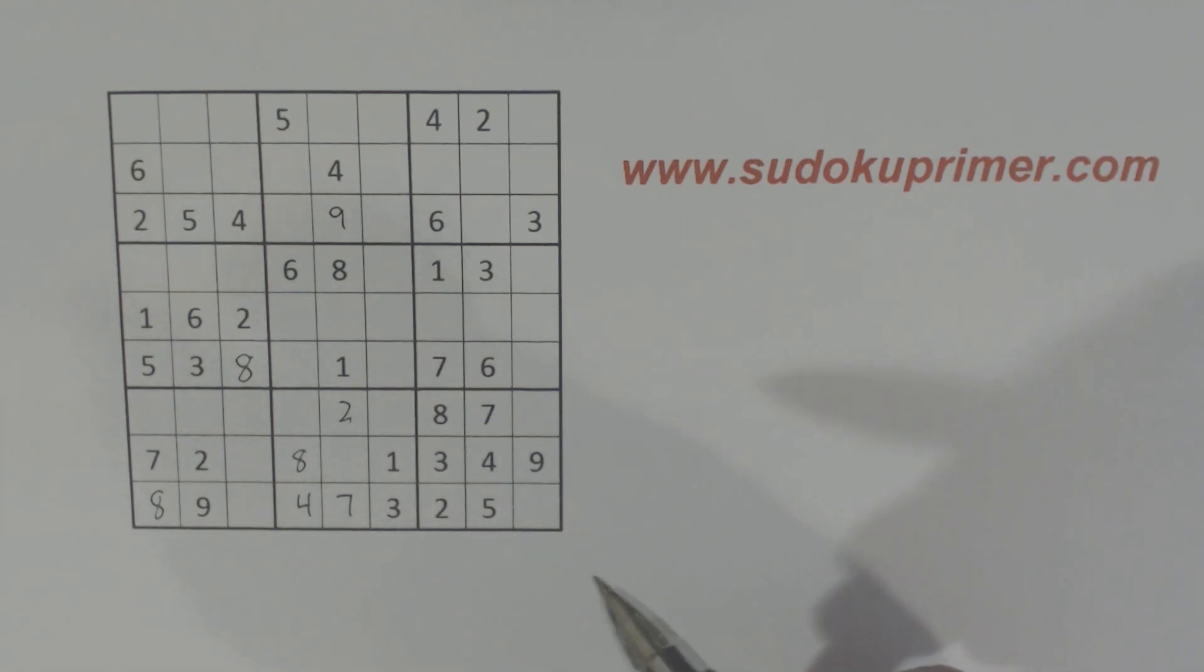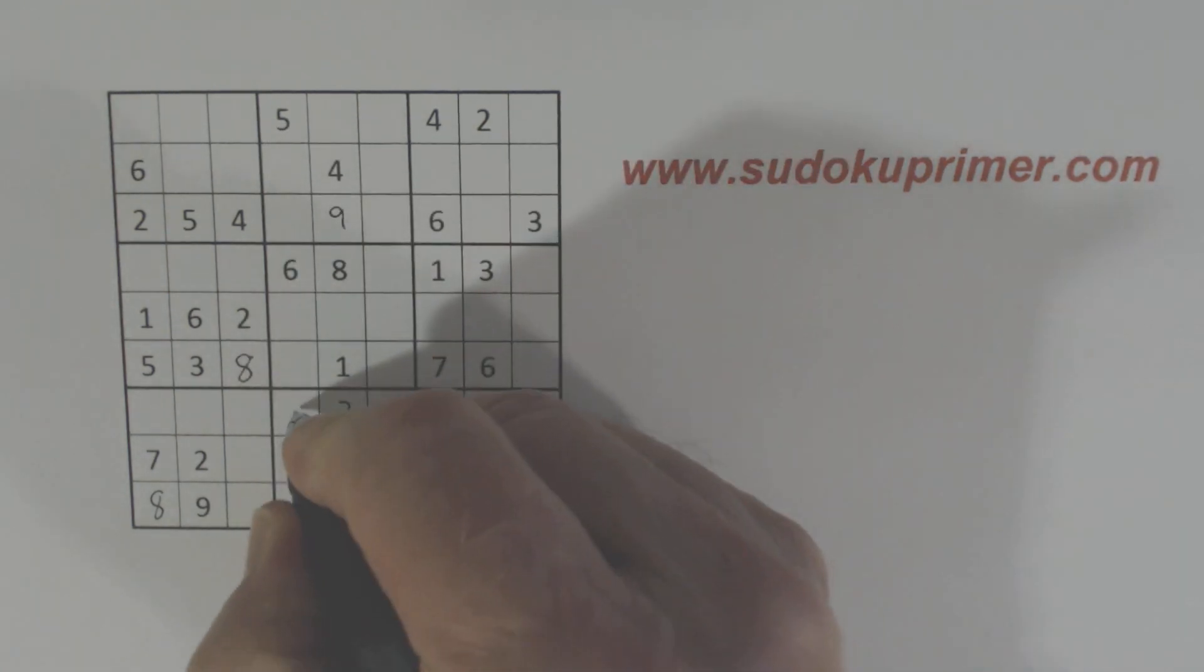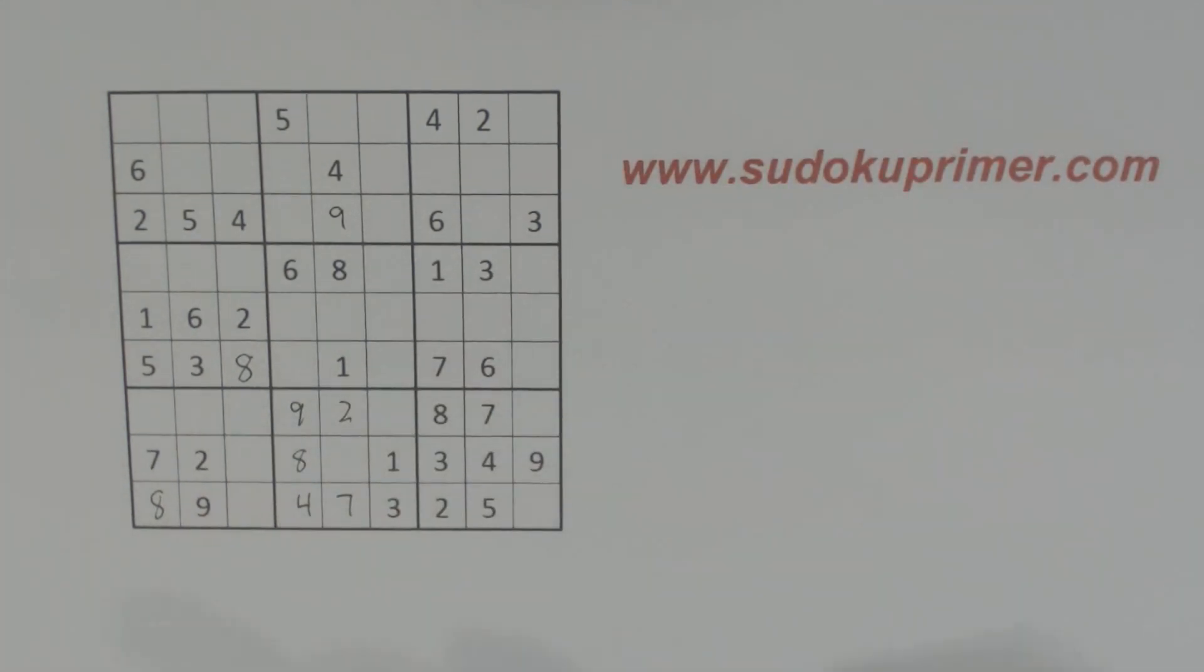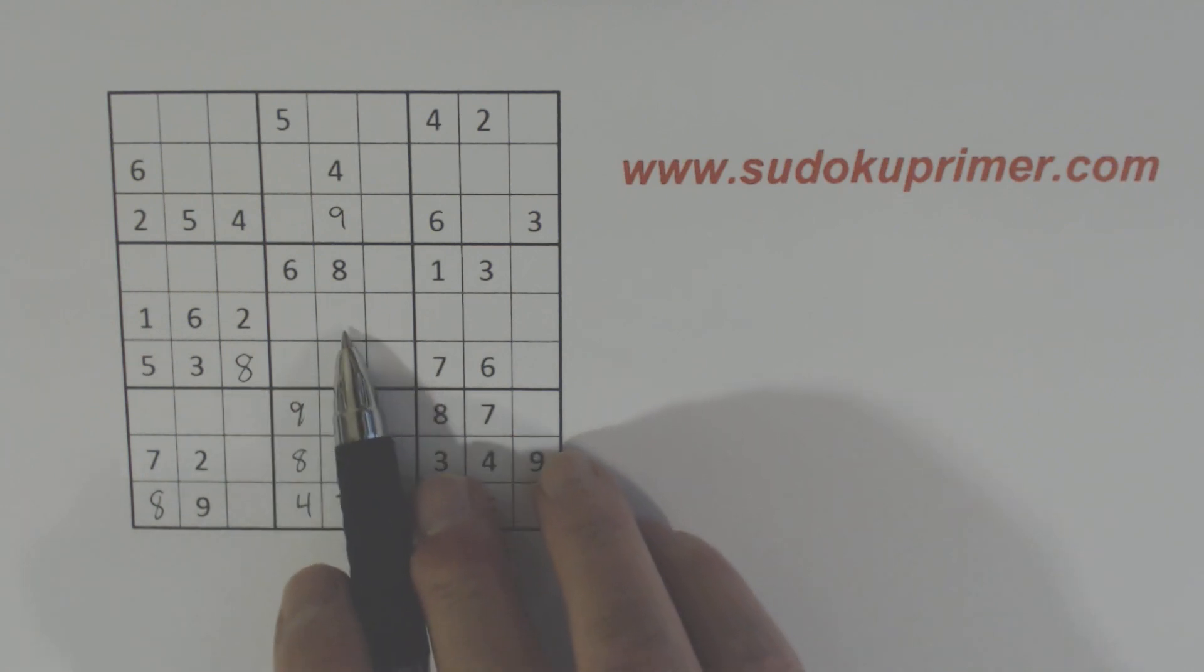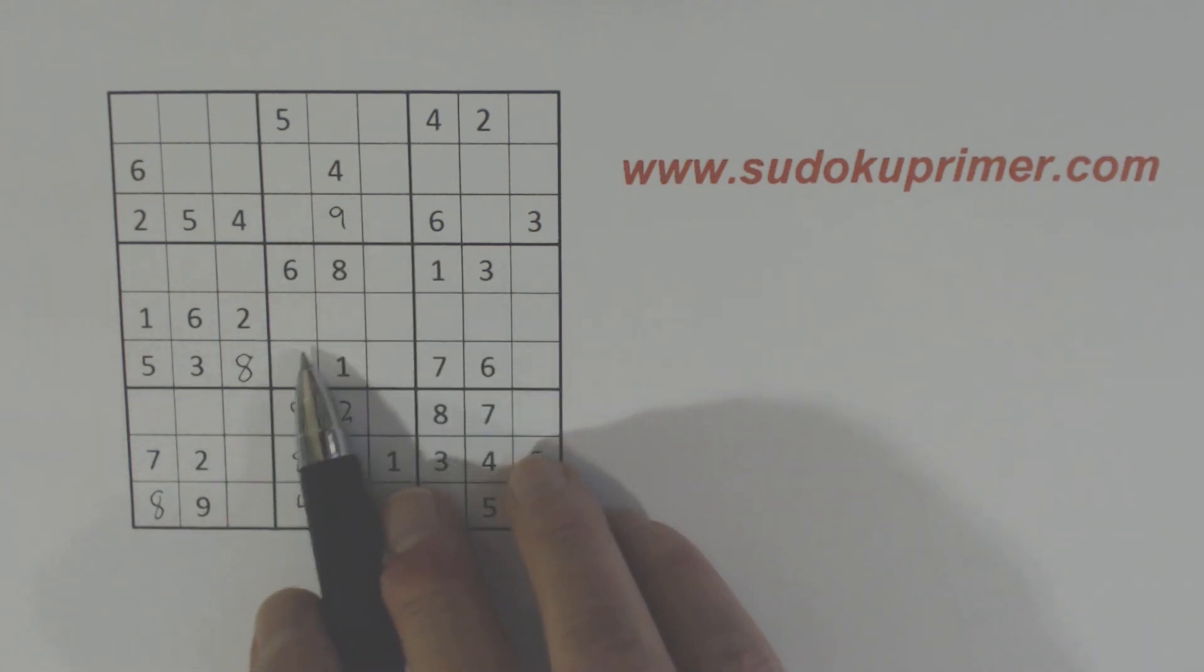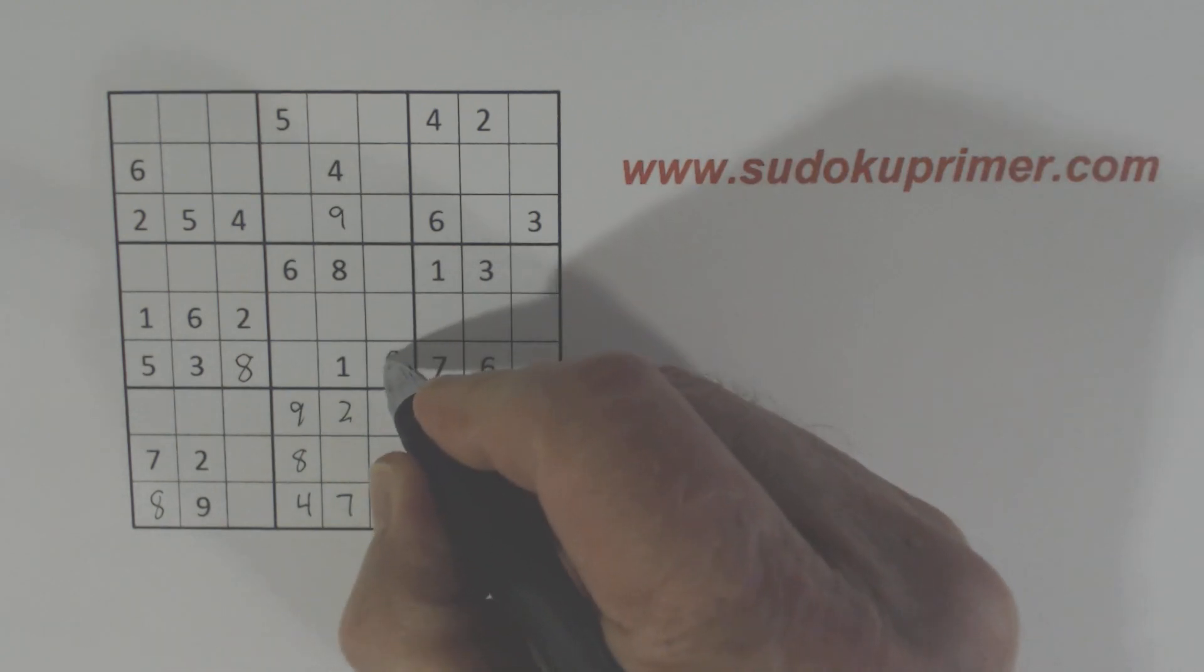Now we also have, let's see, what are we missing here? 1, 2, 3, 4, 5, 6, 9. There's a 5 and a 6 there. So that's a 9. And this 5 and 6 we can't solve yet.